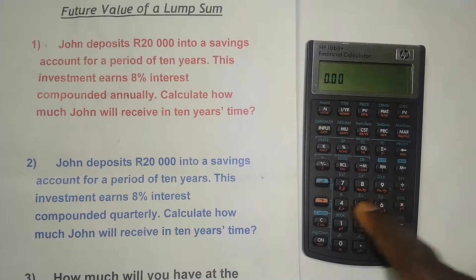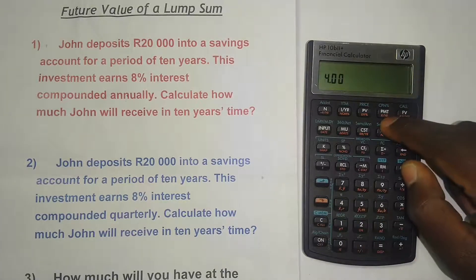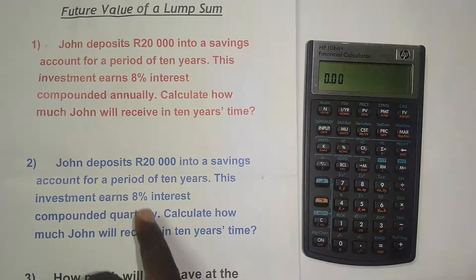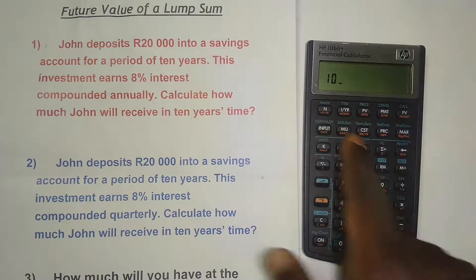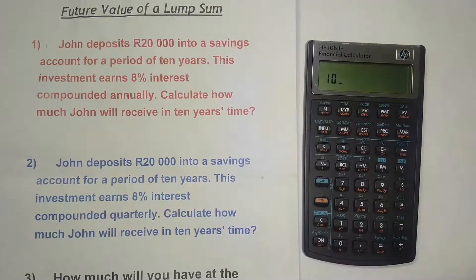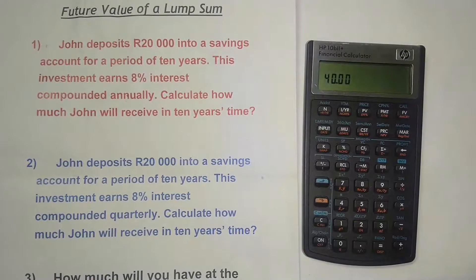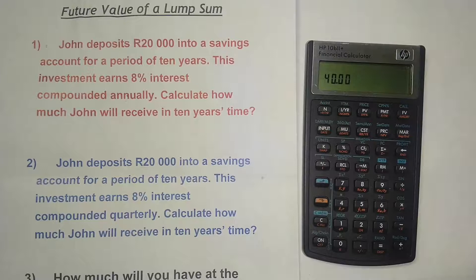To set quarterly compounding, press 4, then the orange button, then PMT — you can see P/YR is now set to 4. Now for the calculation: the period is 10 years, so press 10, but because it's compounded more than once per year I press the orange button first, then press N. The calculator takes the number of years (10) and multiplies it by the number of compoundings per year (4), giving 40 periods.